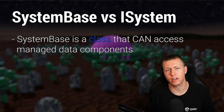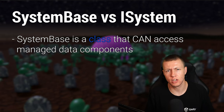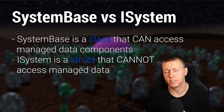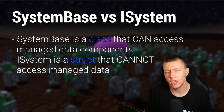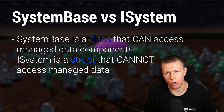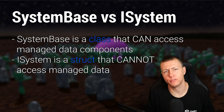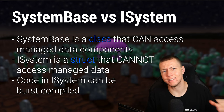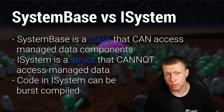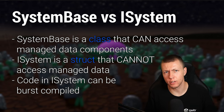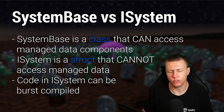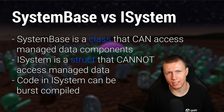The main difference between the two system types is the kind of data they can access. SystemBase, being a class, allows access to managed data — things like Unity MonoBehaviours or types incompatible with the Burst compiler. ISystem is defined as a struct, so it can only access unmanaged data — fully Burst-compatible components with blittable data types. Any code inside ISystem is compiled with the Burst compiler, giving better performance than SystemBase.